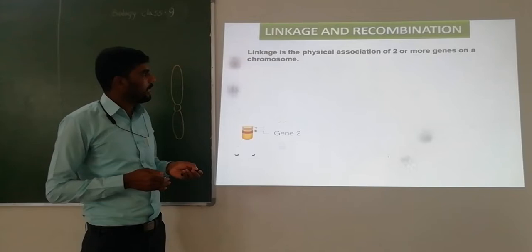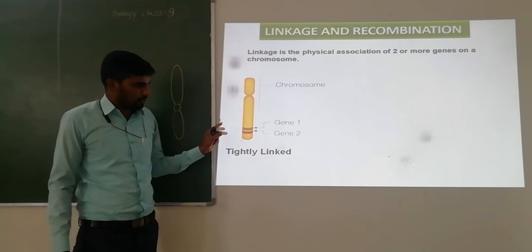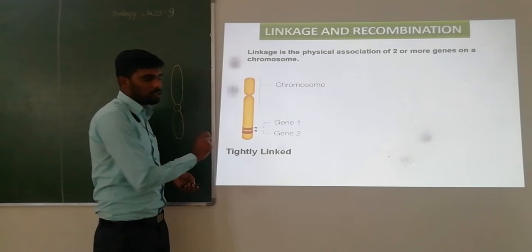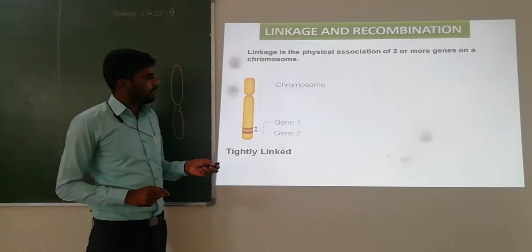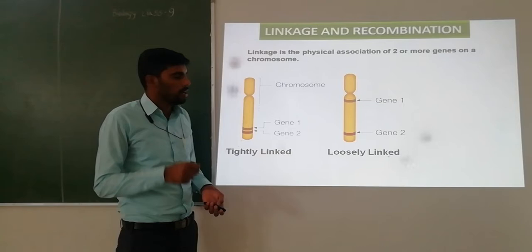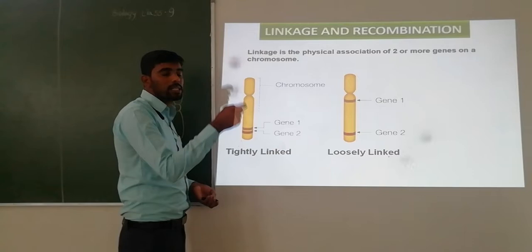Look at the picture. In a chromosome, there are two genes: Gene 1 and Gene 2. The two genes present on the same chromosome are called linked genes because they are very close to each other — these are tightly linked genes. When genes are on the same chromosome but at greater distance from each other, they are called loosely linked genes. Based on the distance, genes are called tightly linked or loosely linked.